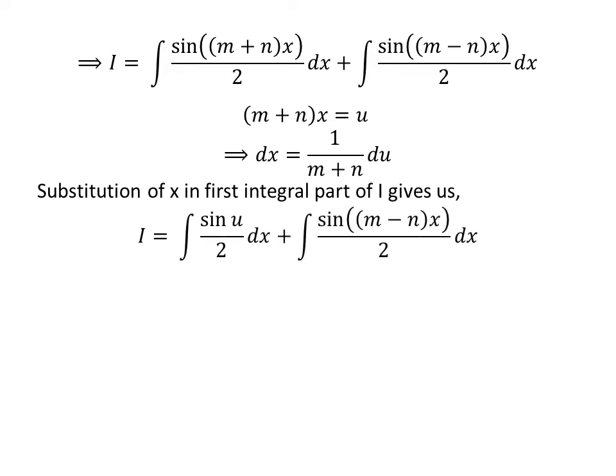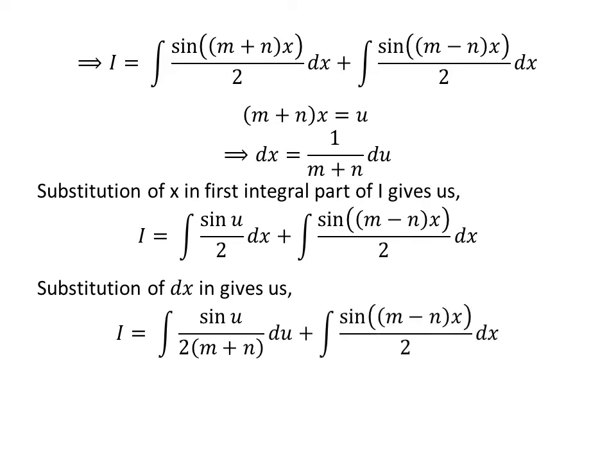Let us substitute m plus n times x by our assumed value u in the integral of sine of (m plus n) times x upon 2 with respect to x. So I is equal to the integral of sine of u upon 2, plus the integral of sine of (m minus n) times x upon 2. Now replacing differential of x by 1 upon (m plus n) times differential of u, we get I is equal to the integral of sine of u upon 2(m plus n) with respect to u, plus the integral of sine of (m minus n) times x upon 2 with respect to x.